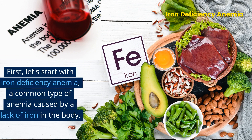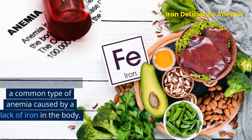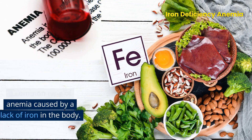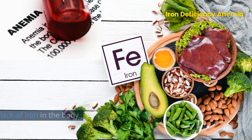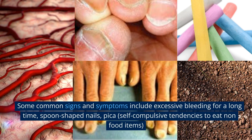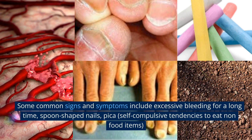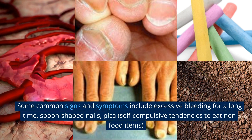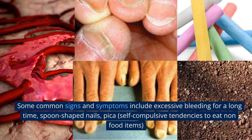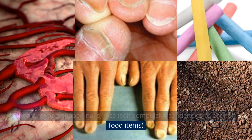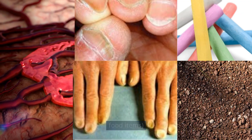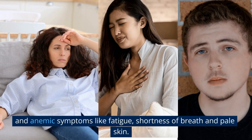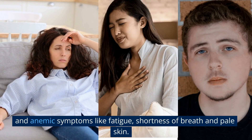First, let's start with iron deficiency anemia, a common type of anemia caused by a lack of iron in the body. Some common signs and symptoms include excessive bleeding for a long time, spoon-shaped nails, pica — self-compulsive tendencies to eat non-food items — and anemic symptoms like fatigue, shortness of breath, and pale skin.